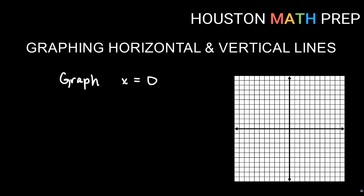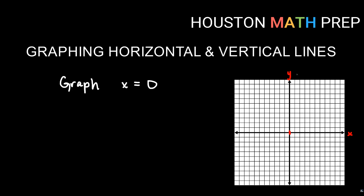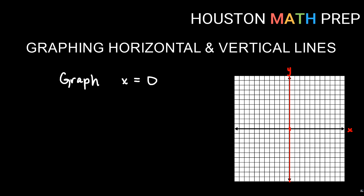Here's graphing x equals 0. So x equals 0 is pretty simple, but sometimes it's so easy that things seem complicated. The positive numbers are to the right, the negative numbers are to the left. So x equals 0 is actually right here on the x-axis. And if I'm only cutting through the x-axis, then what that's really doing is giving me this vertical line here through x equals 0. This is actually the y-axis — so if you have x equals 0, that's actually the y-axis. They are the same thing.